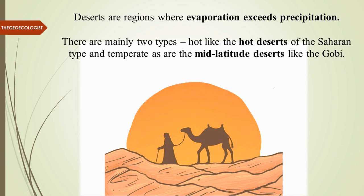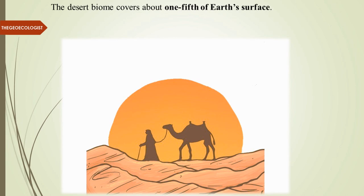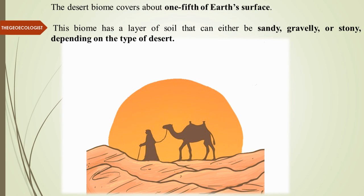The desert biome covers about one fifth of Earth's surface — a huge area. This biome has a larger layer of soil that can be sandy, gravelly, or stony. These three compositions depend upon the type of desert — sandy, gravelly, or stony — depending upon the presence of that particular material.